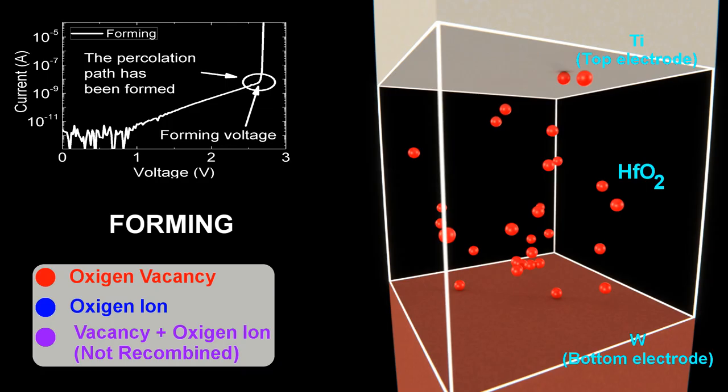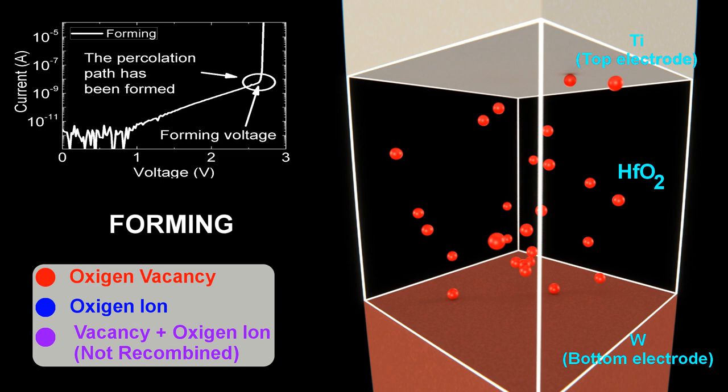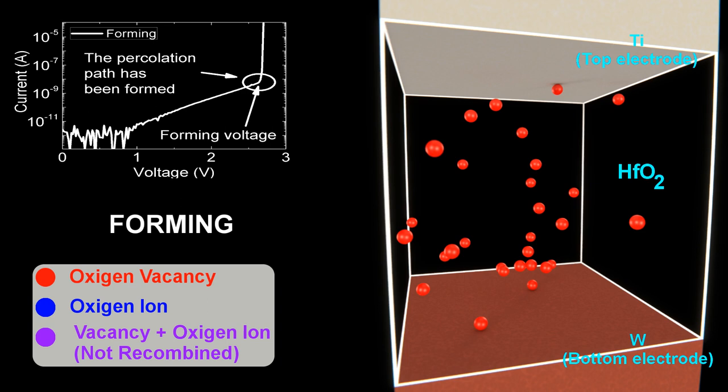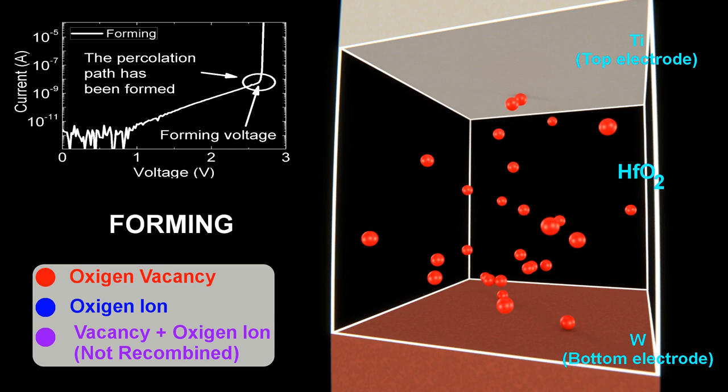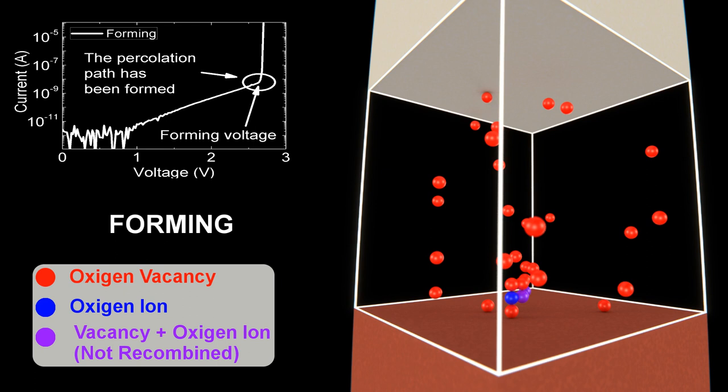The simulation starts with the forming process. The dielectric is in its pristine state. An electric field is applied under ramped voltage stress and oxygen vacancies are generated in the dielectric, represented as red balls.